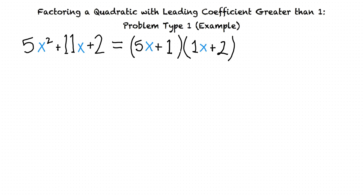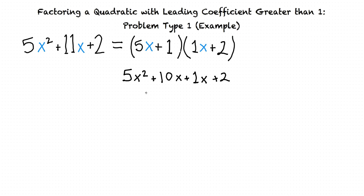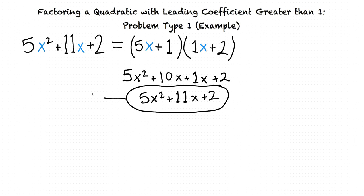Multiplying (5x + 1)(x + 2) using FOIL: first terms give 5x × x = 5x²; outer terms give 5x × 2 = 10x; inner terms give 1 × x = 1x; last terms give 1 × 2 = 2. Combined: 5x² + 11x + 2 — this matches our original expression, confirming we factored correctly.